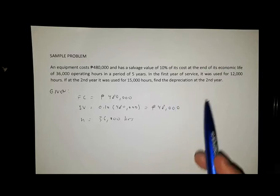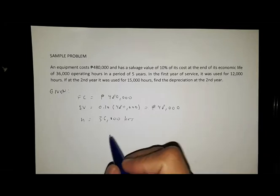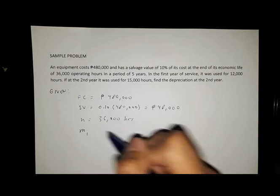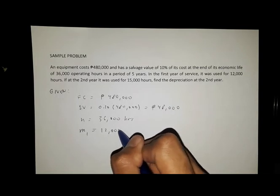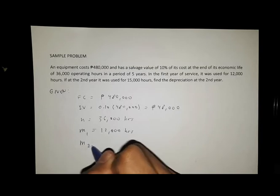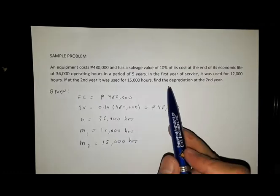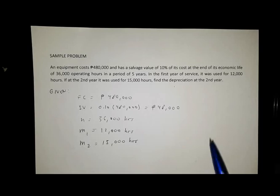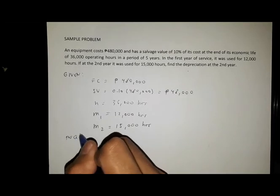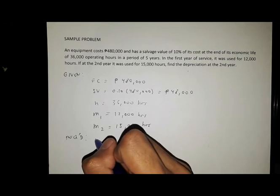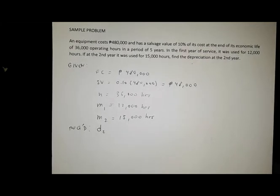So here we are concerned with n as the total number of operating hours. In the first year of service it was used for 12,000 hours, so our m1 for the first year is 12,000 hours. For the second year it was used for 15,000 hours. Now find the depreciation at the second year.